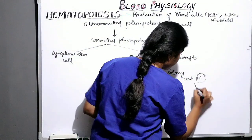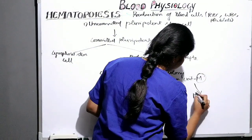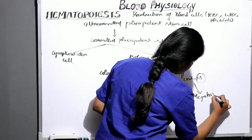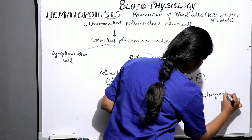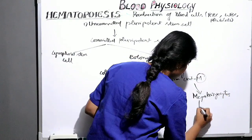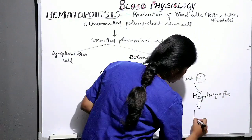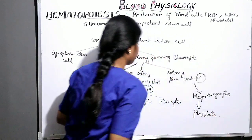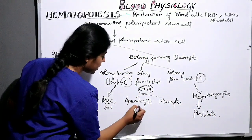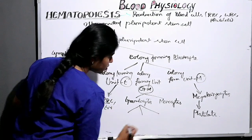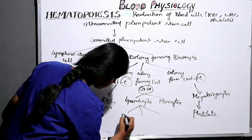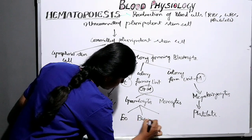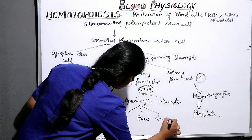Colony forming unit M is further divided into megakaryocytes, which give rise to platelets. Granulocytes are further divided into eosinophils, basophils, and neutrophils.